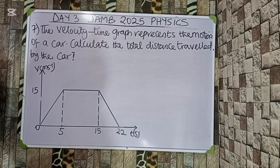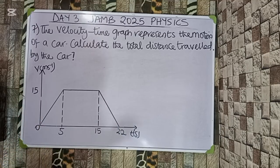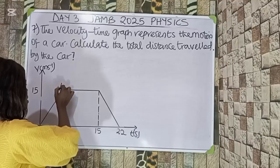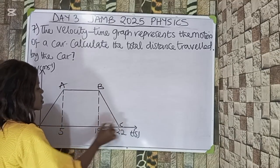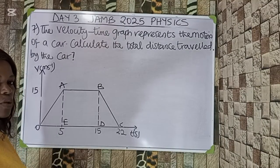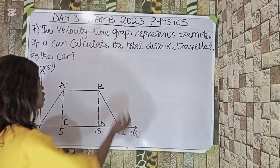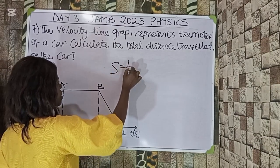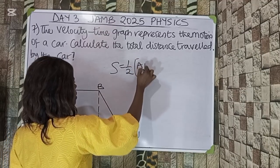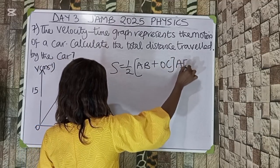Question 7. The velocity-time graph represents the motion of a car. Calculate the total distance traveled by the car. To calculate the total distance from a velocity-time graph, I will label the points A, B, C, D, and E, and use the area of a trapezium to solve it. The formula is: distance x = ½(AB + OC) × AE.